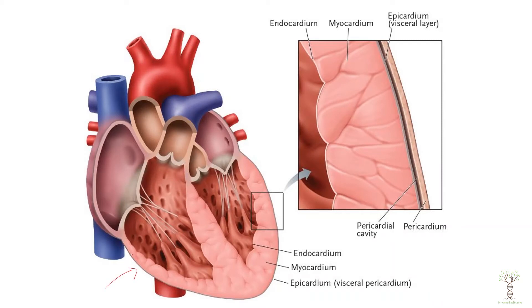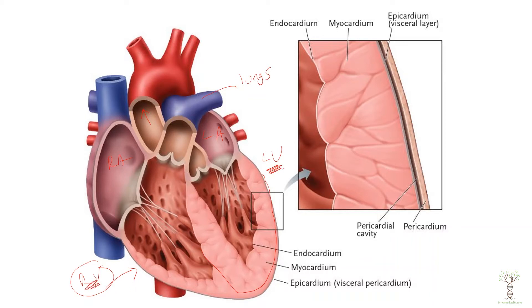Now let's look at the wall of the heart and a few layers of tissue. Looking at a frontal section with the heart cut in half, we can see the right atrium, left atrium, right ventricle, and left ventricle. Blood from the right ventricle goes to the lungs, and blood from the left ventricle goes to the aorta and the rest of the body. Notice the muscle wall of the left ventricle is thicker because it has to push blood out to the body, which has much higher resistance than pushing blood to the lungs.